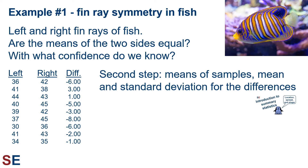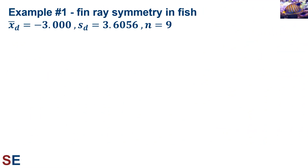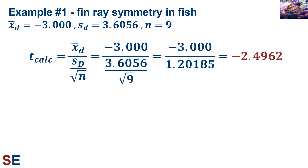We calculate the means of the samples and the mean and standard deviation of the differences. We get a mean of 38 for the left side, 41 for the right side, and a mean of −3 with a standard deviation of 3.6056 for the differences, based on a sample size of 9. The t-calculated value is the mean of the differences divided by the standard error: −3 divided by (3.6056 divided by √9), giving a t-calculated value of −2.4962. The degrees of freedom is 9−1=8.